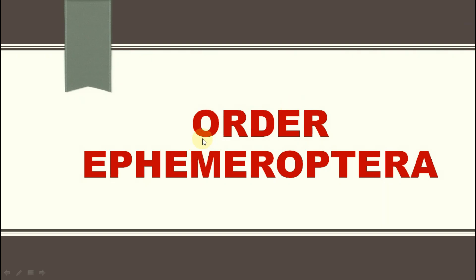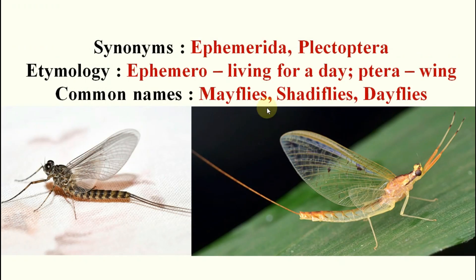Today we will discuss Order Ephemeroptera. The synonym is Plectoptera. The etymology: 'ephemera' means living for a day only — the adult will live for a single day — and 'tera' means wings. That's why the name is Ephemeroptera. The common names are mayfly, shadis flies, and day flies.